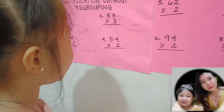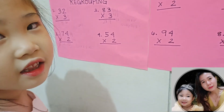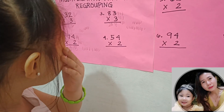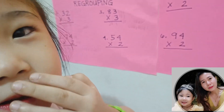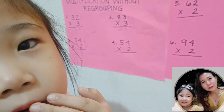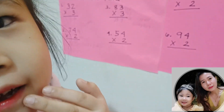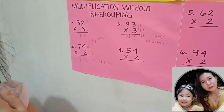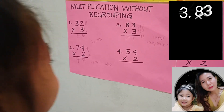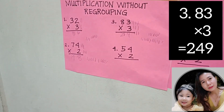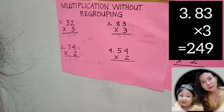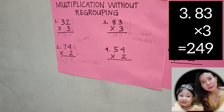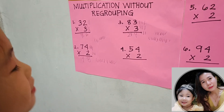8, 16, 24. Okay. Number 3 is 83 times 3 equals 249. Next, number 4.